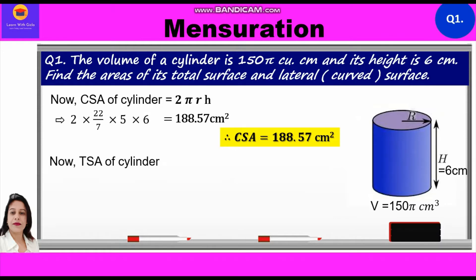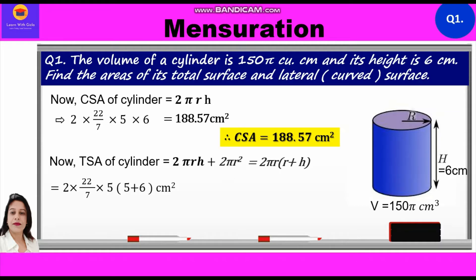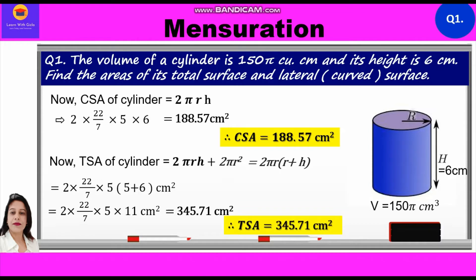Now, total surface area of the cylinder: the formula is 2πrh + 2πr², which we can factor as 2πr(r + h). Substituting the values: 2 × (22/7) × 5 × (5 + 6) = 2 × (22/7) × 5 × 11 = 345.71. So total surface area = 345.71 centimeters square.